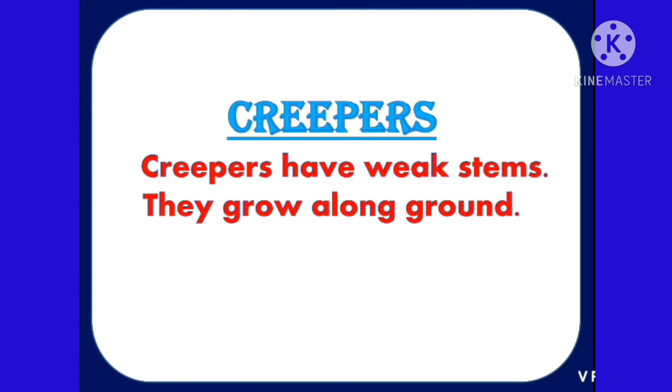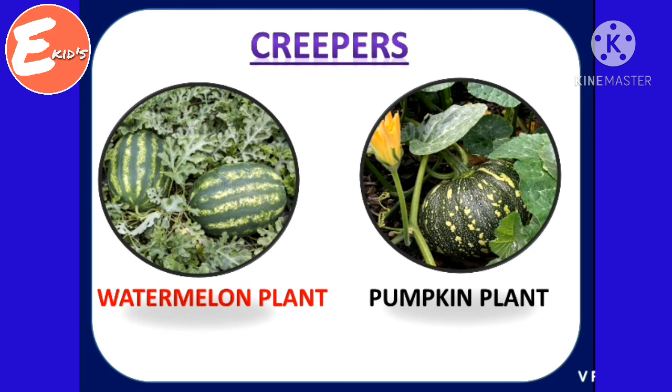Creepers. Creepers have weak stems. They grow along the ground. For example, watermelon plant and pumpkin plant.